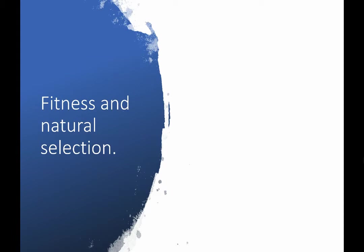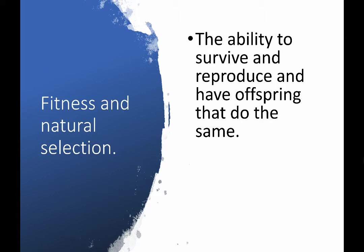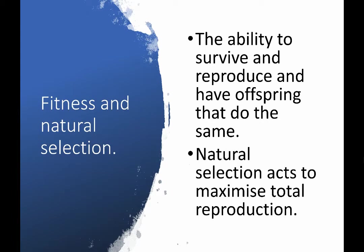Before we dive into the rest of the content, I want us to remember what fitness and natural selection are. Fitness is the ability to survive and reproduce and have offspring that do the same — this is where we get 'survival of the fittest' from. Those individuals that can survive, reproduce, and have offspring that do the same have a higher fitness level. Natural selection acts to maximize total reproduction over the course of an entire life.